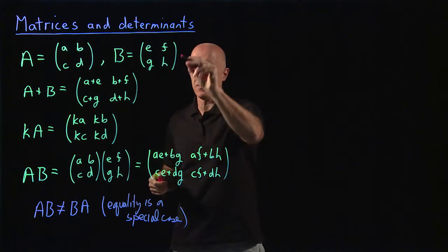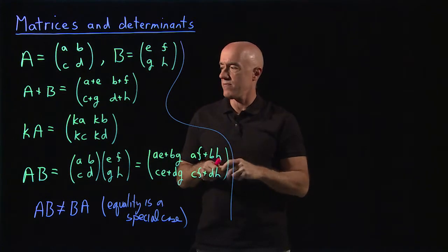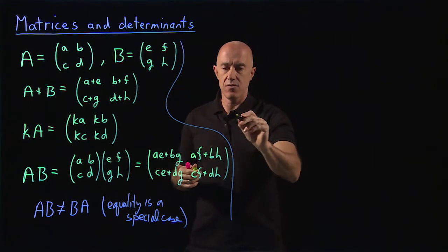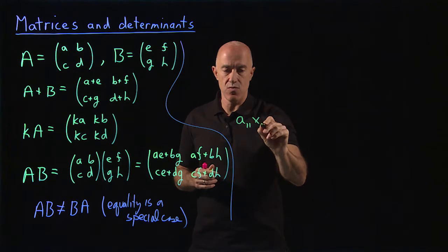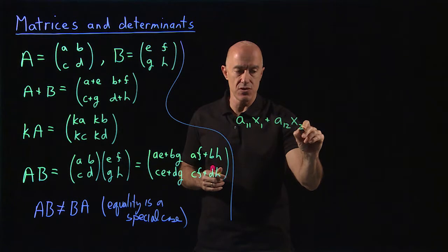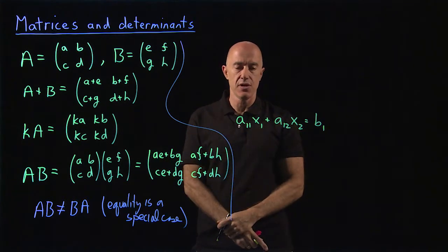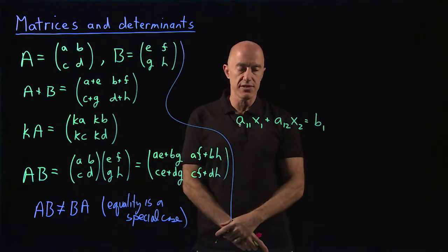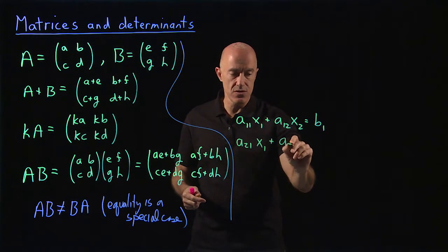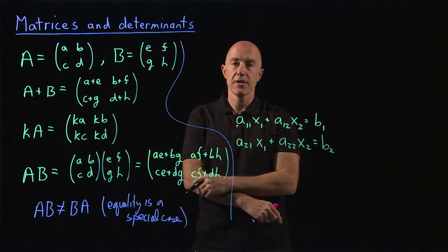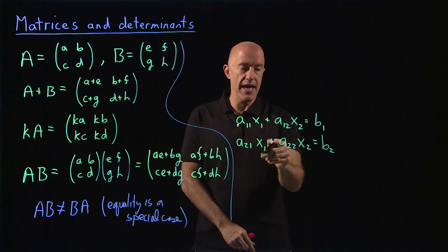How are matrices useful in this course? They're useful because you can write a system of linear equations in matrix form. We can have A11 times x1 plus A12 times x2 equals B1 — a linear equation for x1 and x2, where A11 and A12 are just numbers and B1 is just a number. We can write another linear equation: A21 times x1 plus A22 times x2 equals B2. This is a system of two linear equations and two unknowns, where x1 and x2 are the unknowns and the A's and B's are given.